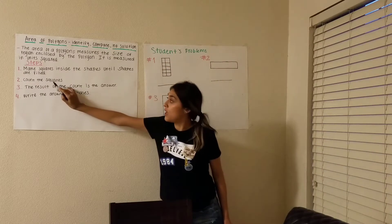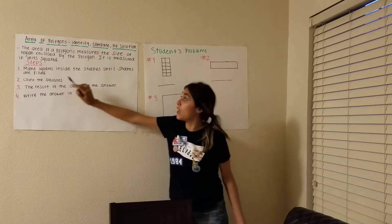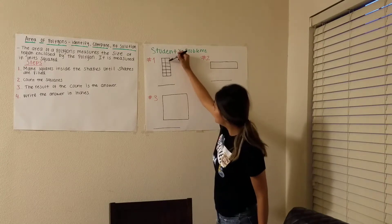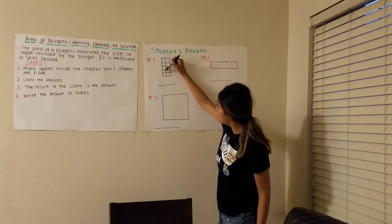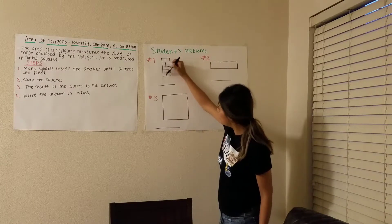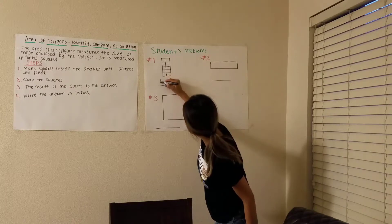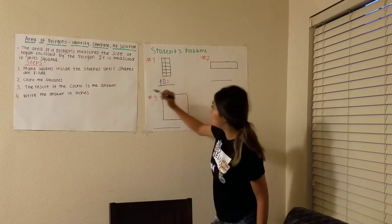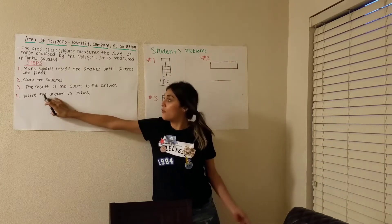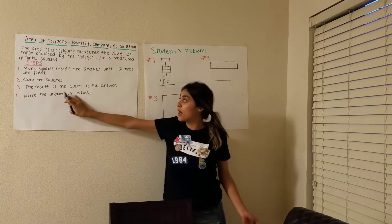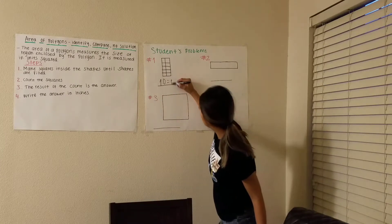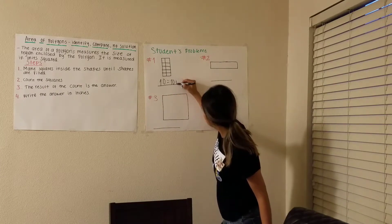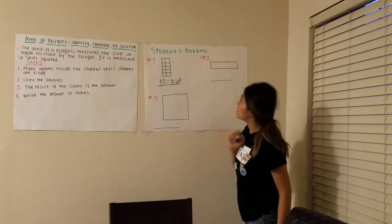Step two: we have to count our squares. One, two, three, four, five, six, seven, eight, nine, ten. The answer — but step four says we have to write our answer in inches. So it's 10 inches.